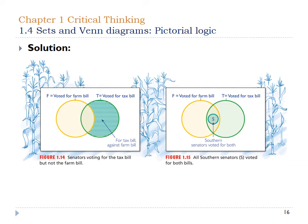In the first situation — senators voting for the Tax Bill but not the Farm Bill — the only shading is everything not inside the Farm Bill circle. Some people who voted for the Tax Bill aren't shaded because they also voted for the Farm Bill. In the second situation, if all Southern senators voted for both bills, we'd put another circle right in the middle, because those Southern senators voted for both the Farm Bill and the Tax Bill.